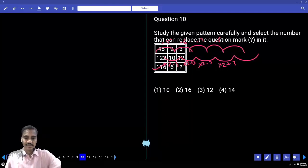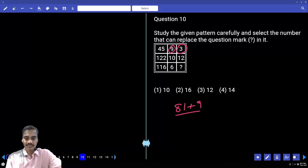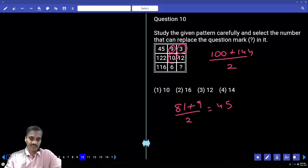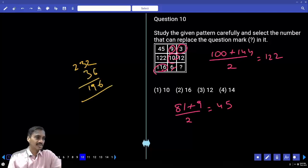Question number ten: 9 square is 81, 3 square is 9. Sum is 90 divided by 2, that is 45. Similarly, 10 square is 100, 12 square is 144. Sum is 244 divided by 2, which is 122. For 116, 116×2 is 232. From 232 subtract to get 36 and 196. 196 is 14 square, 36 is 6 square. 14 square plus 6 square average is 116. Answer is 14, choice four.